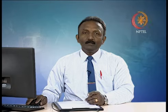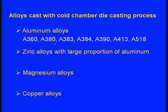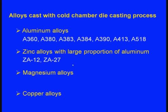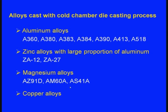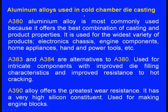Alloys cast with cold chamber die casting in detail: aluminum alloys A360, A380, A383, A384, A390, A413, A518. Zinc alloys ZA12 and ZA27. Magnesium alloys AZ91D, AM60A, AS41A. Some copper alloys can also be used. Aluminum alloys used in cold chamber die casting machines will now be discussed in more detail.